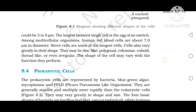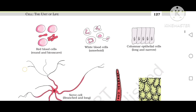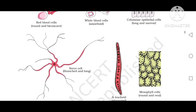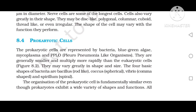Figure 8.1 shows different shapes of cells: red blood cell — round and biconcave; white blood cell — amoeboid; columnar epithelial cell — long and narrow; nerve cell — branched and long; tracheids — elongated; mucophil cell — round and oval. The prokaryotic cells are represented by bacteria, blue-green algae, mycoplasma, and PPLO (Pleuropneumonia-like organisms). They are generally smaller and multiply more rapidly than eukaryotic cells.